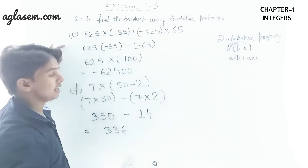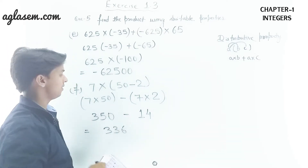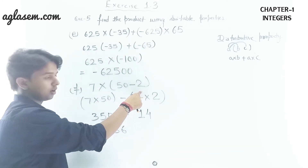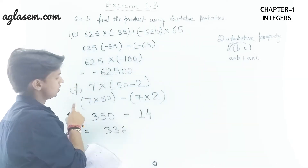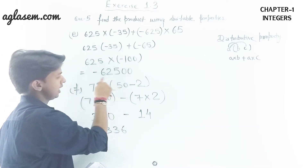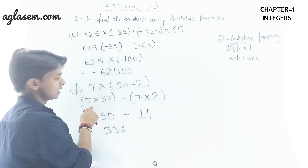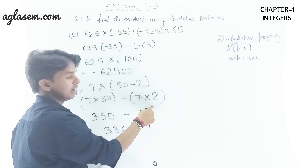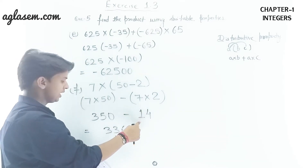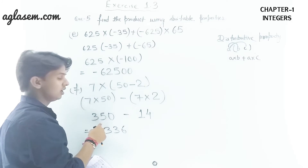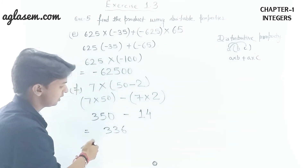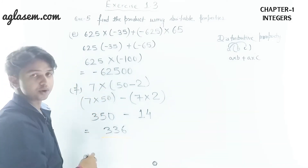Part f: 7 × (50 − 2). Applying the distributive property: 7 × 50 − 7 × 2 = 350 − 14 = 336. This is the product for Part f.